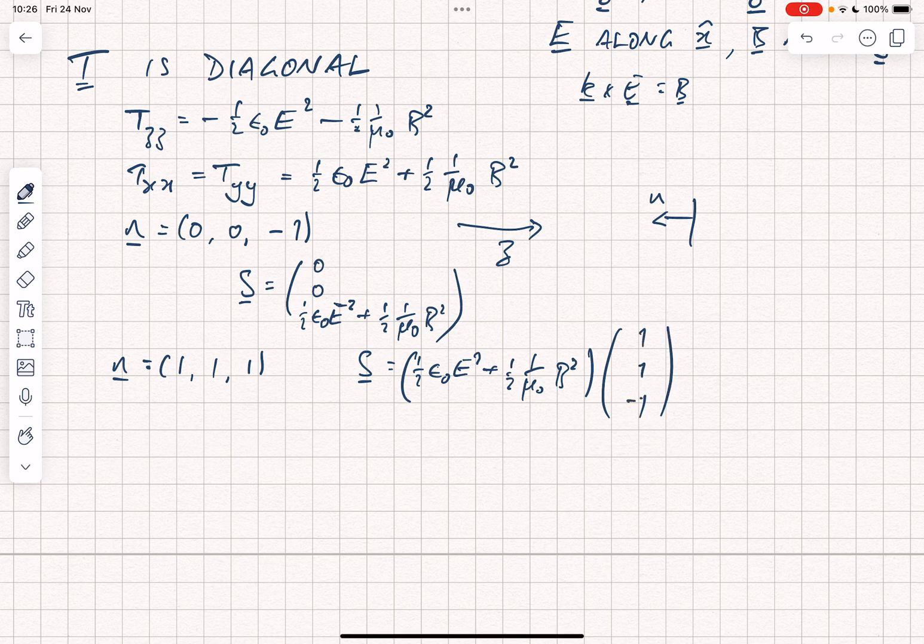So here we have an example where you've got a plane wave traveling along the Z direction and the stress on a surface along the 1, 1, 1 direction would be components along X, Y and Z.